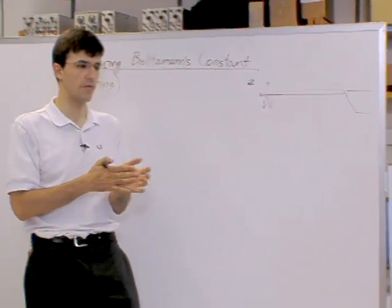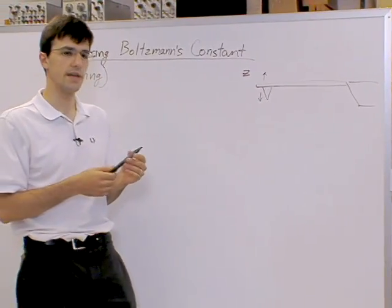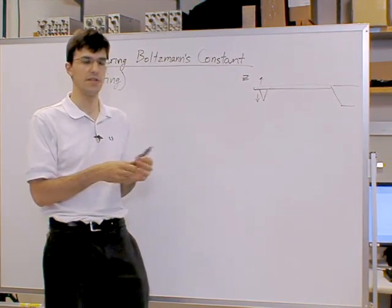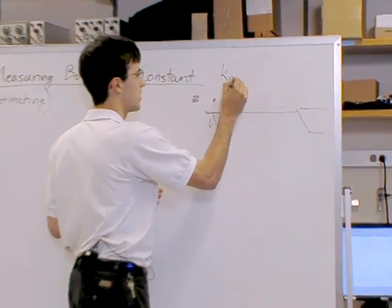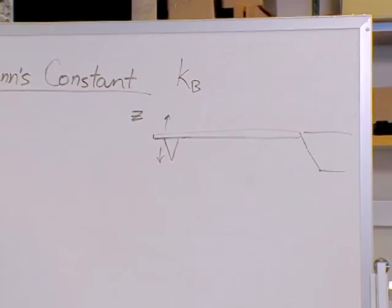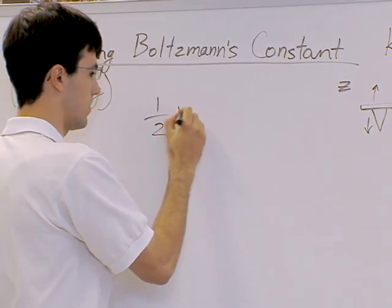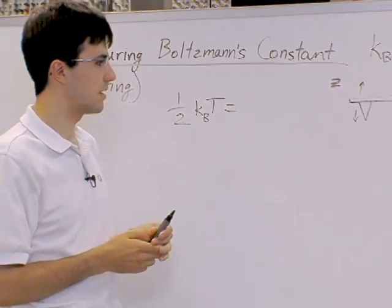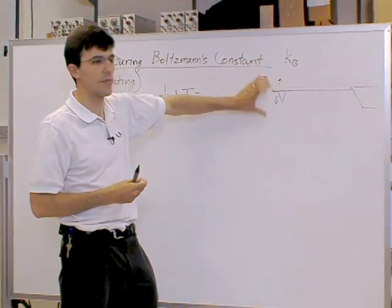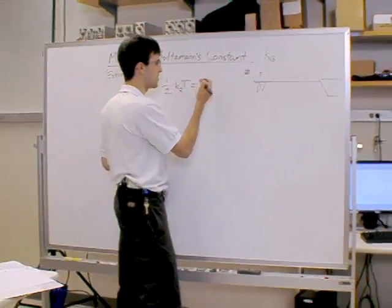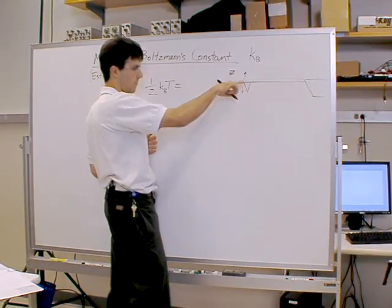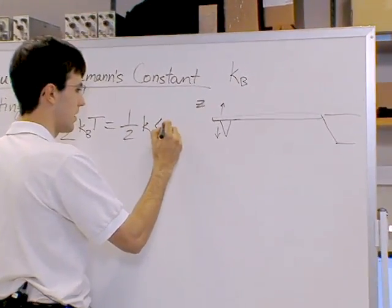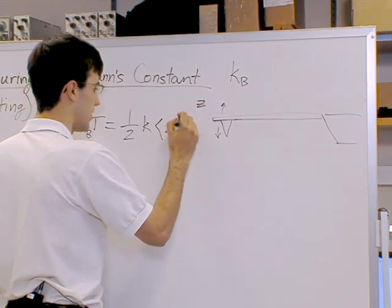The simplest relation that we can take advantage of is the idea that in a second-order system, every degree of freedom contains one-half kBT of energy, where kB is Boltzmann's constant that we're trying to measure. We're going to equate this to the energy present in this vibrational degree of freedom that the cantilever has. We're going to represent that as the kinetic energy of this little spring that vibrates, which is just going to be one-half times the spring constant k and the mean square vibration of the cantilever z squared.